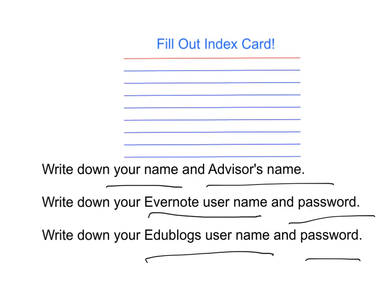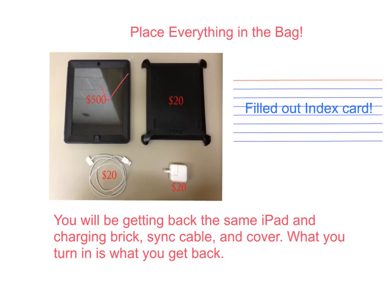Everything will go in the bag. The iPad, if it's not turned in, will be a $500 charge to your parents. Your cover, if it's not turned in, will be a $20 charge to your parents. If your cover is broken — because these corners often crack and fall off — you will not necessarily be charged. You should have the charging cord and the power brick that we gave you; you can see the pricing for each of those. You will also have your filled index card in that bag, and you will be getting back the same iPad, charging brick, sync cable, and cover.